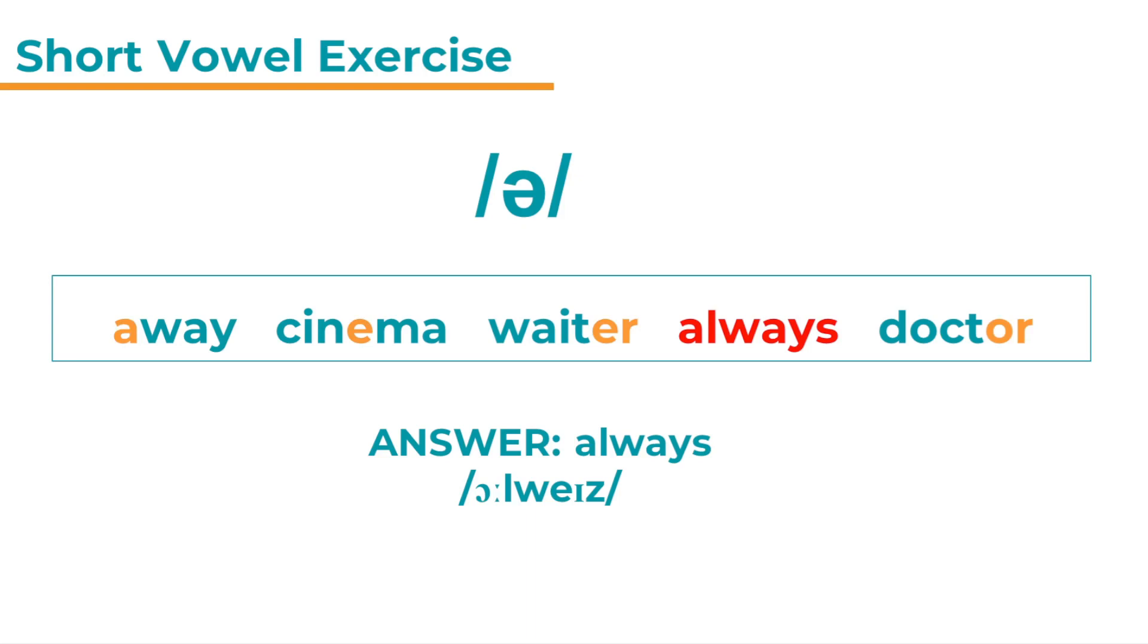So let's have a look where the schwas are in all of the other words. This is an unstressed syllable because the stress is on way the second syllable. Away. So the a the letter a is a schwa sound. Away. Then we have it in cinema the second syllable. Cinema. And then in waiter and doctor it's right at the end. The er and or are schwa sounds sometimes they are r-colored schwa sounds. But they both are represented by a schwa. Waiter. Doctor.